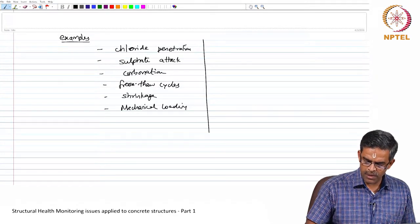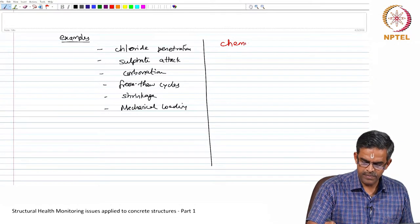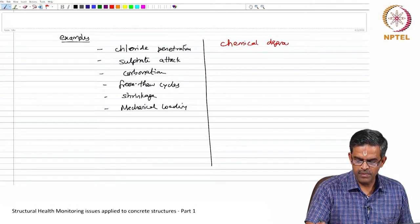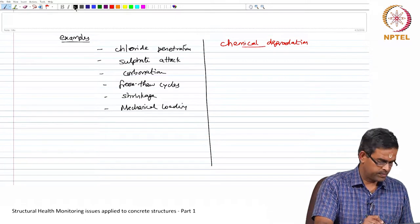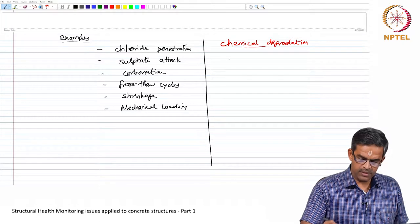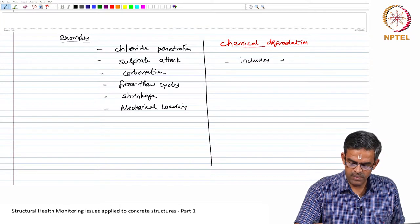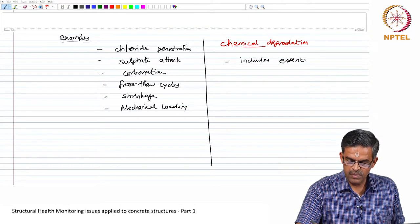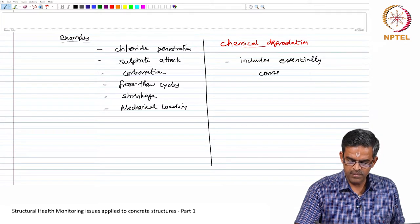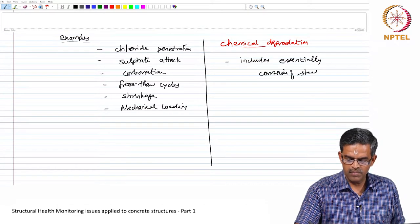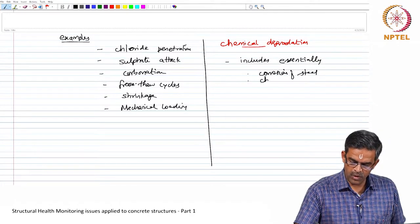When we talk about chemical degradation in particular, this includes essentially corrosion of reinforcement, chloride penetration.